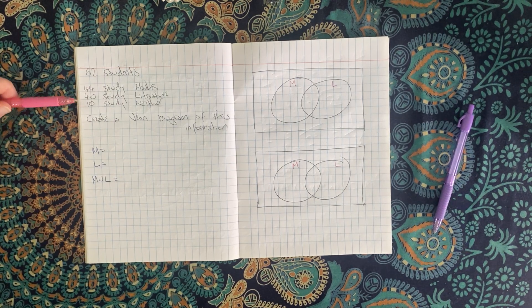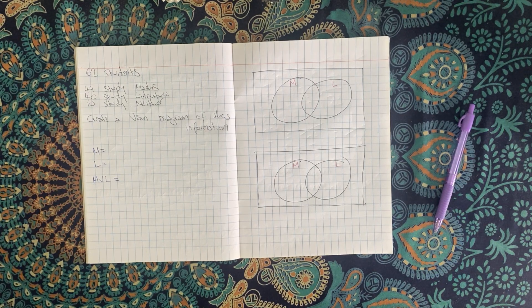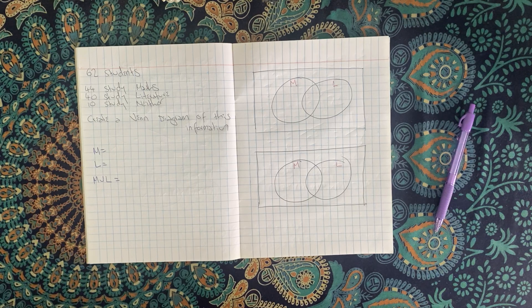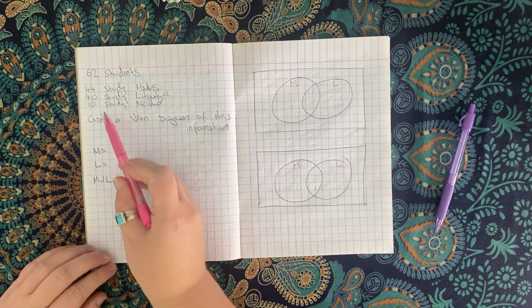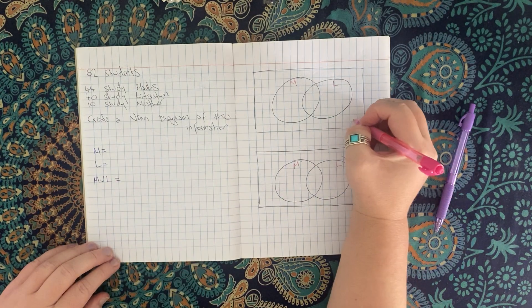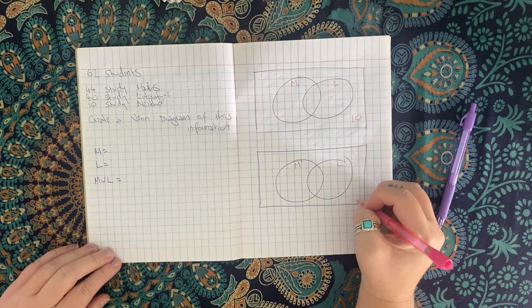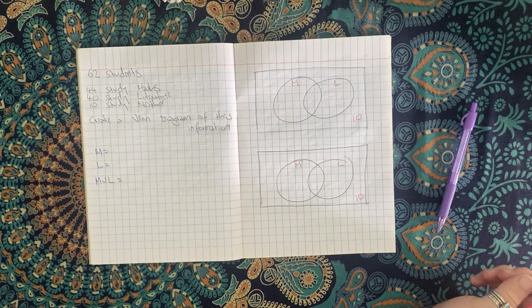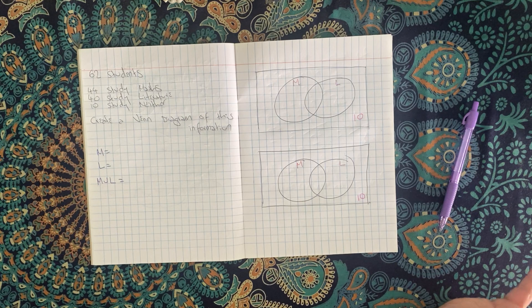You obviously can't just add them together because that's too many students. That would be 94 students and we know there's only 62. So I'm going to start with the information I do know. 10 students study neither, so I'm going to put some variables and numbers in here. The 10 students that study none of them belong in the everything section, but in neither of our circles.